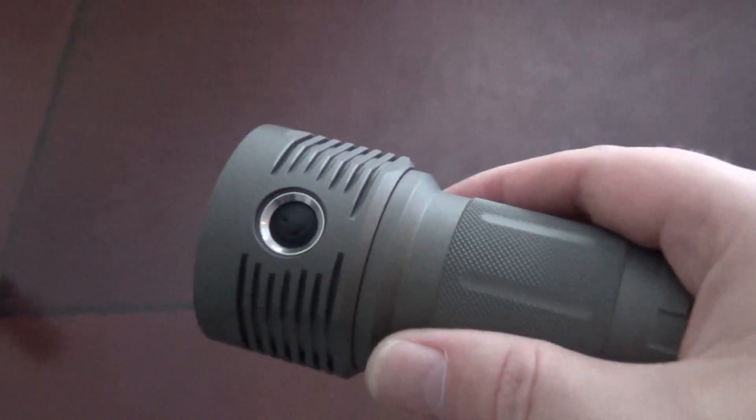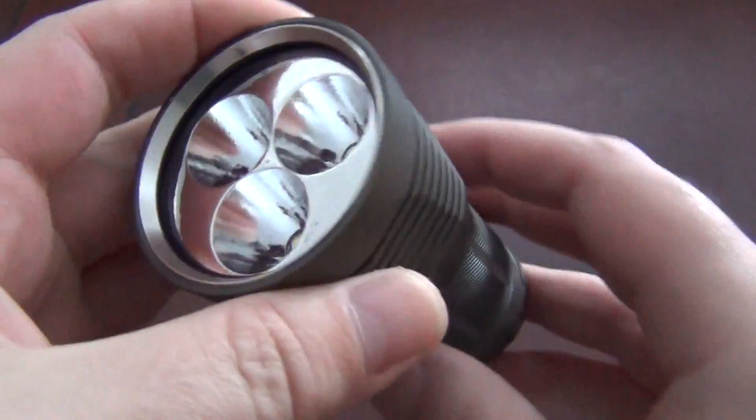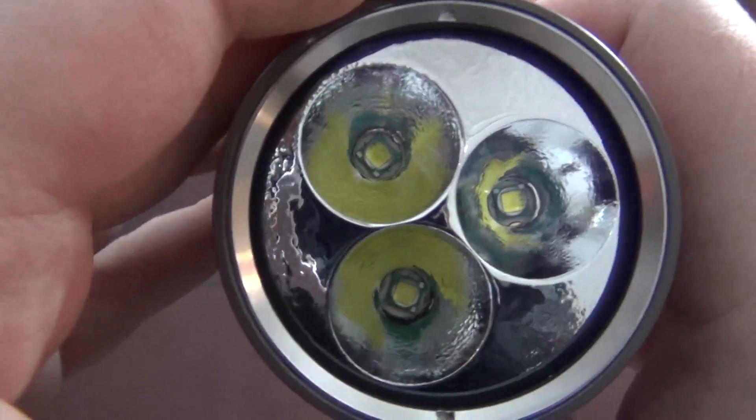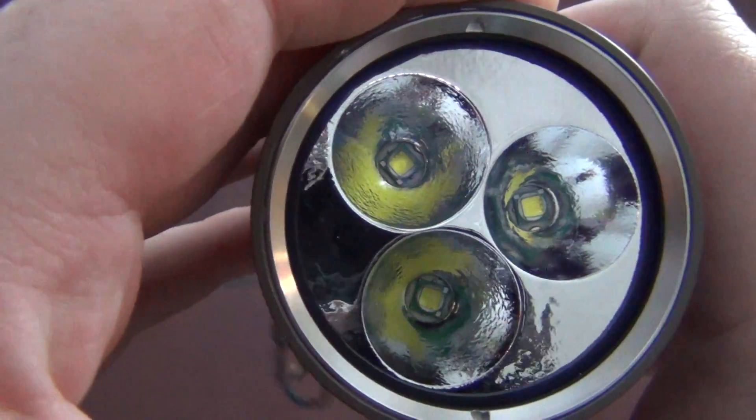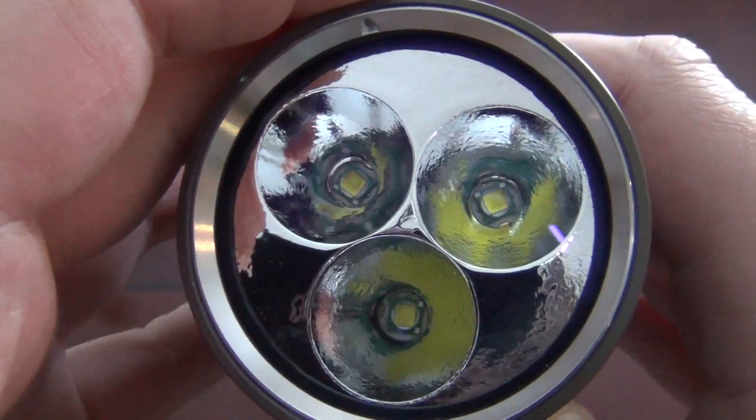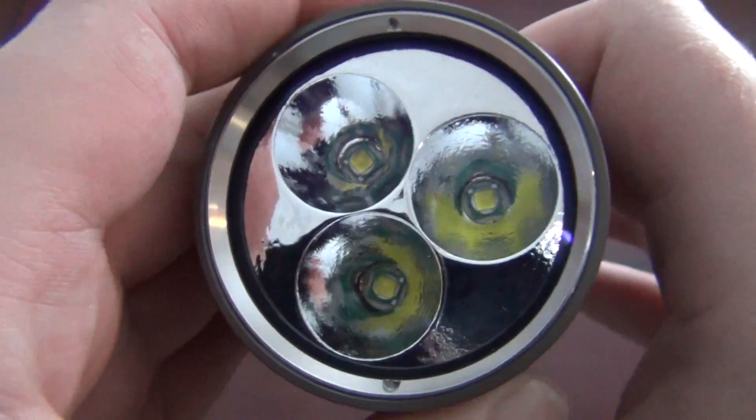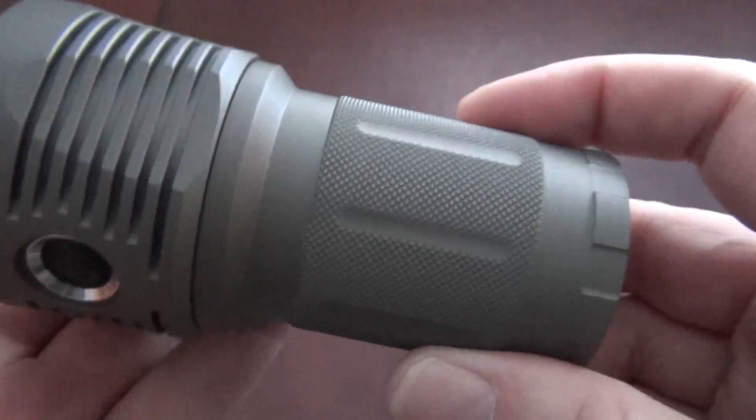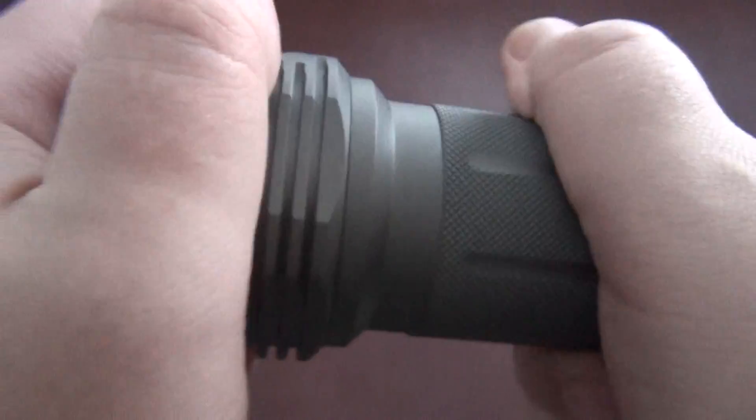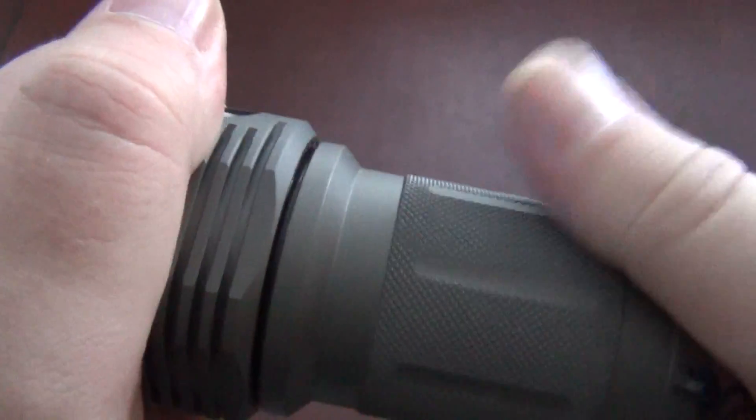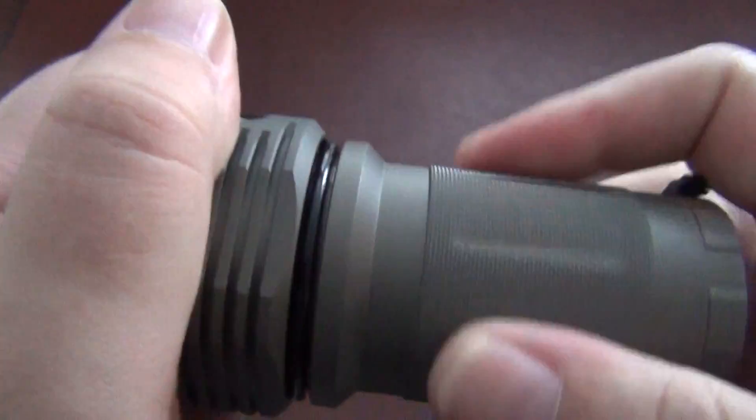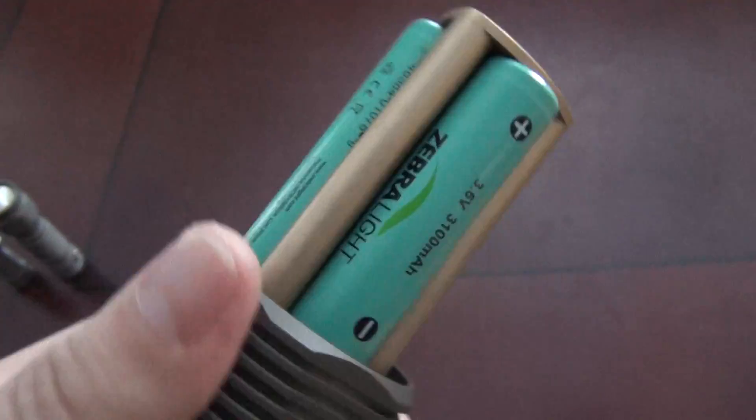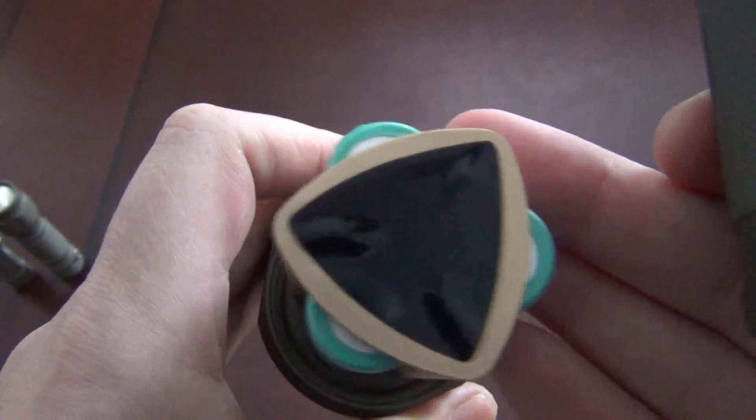It is the S6330. This is a 3 XML flashlight. From what I understand, it uses U3 bin XML emitters, three of them, and it uses three 18650 batteries.